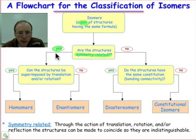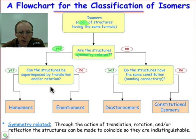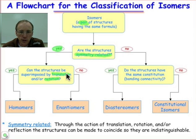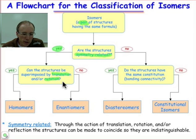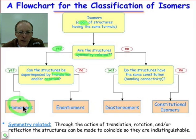If the answer is yes, we have to ask ourselves another question: how is it that we can bring those two molecules into superposition? Can we do it by only a rotation and a translation? If it's only a rotation and translation that brings one molecule into the other, then those two structures aren't different at all — they're the same. We didn't answer the question right the first time. They're homomers.